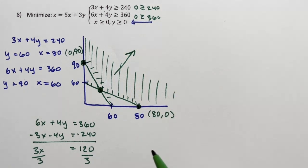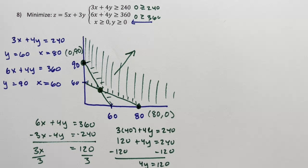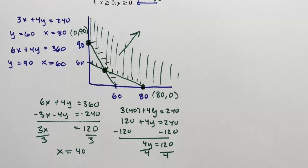I'm going to put that 40 into the first equation to figure out y. So I'm going to say 3 times 40 plus 4y equals 240. 120 plus 4y equals 240. Subtract 120. 4y equals 120. Divide by 4, y equals 30.